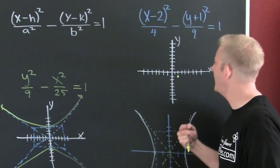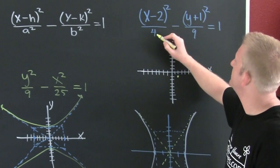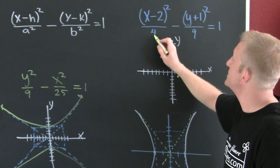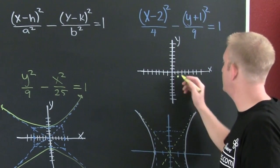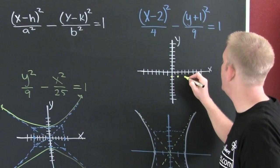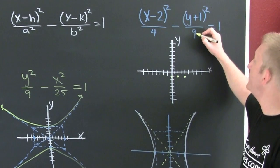This says two in the X direction from that point: one, two there, one, two there. This says three in the Y direction from that point.